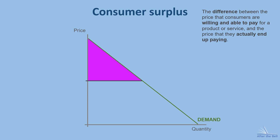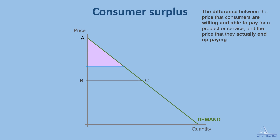Assuming consumer surplus is initially shown by the area of the purple triangle outlined by points A, B and C, an increase in price will decrease consumer surplus and it will now just be the triangle bounded by points A, D and E. If there was a decrease in price, consumer surplus rises and will be shown by the whole area A, G, F. So as price goes up, consumers have to pay more and this eats into their surplus, but as price falls they gain more surplus.